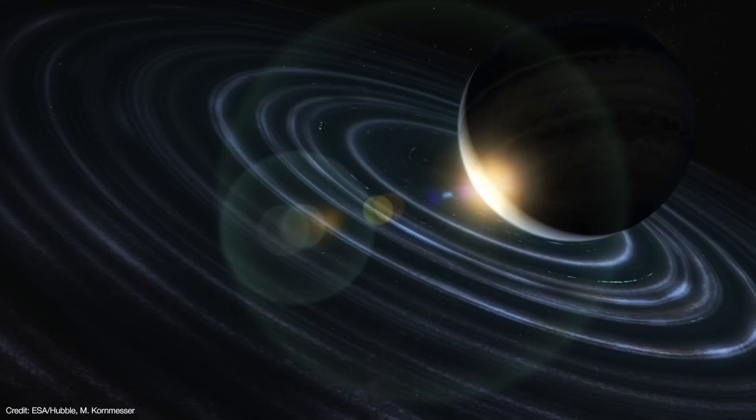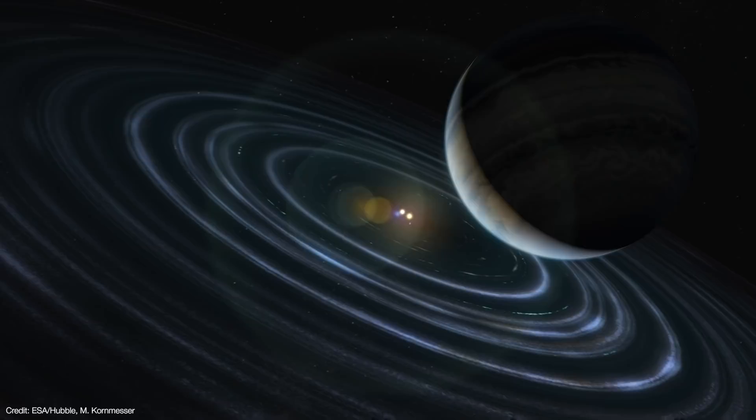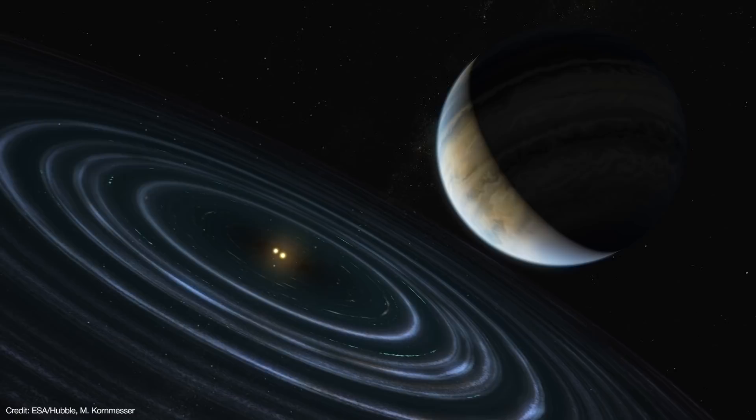The models predict the planet's periastron, or its closest approach to the star, to be no closer than 190 AU. The small clearing at the center of the disk extends out to about 50 AU, so even at 190 AU close approach, the planet's orbit would still be detached from any planets circling the star.